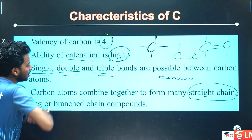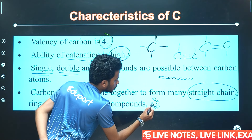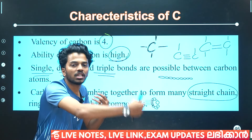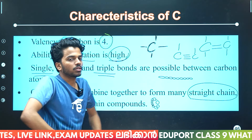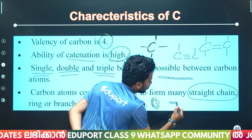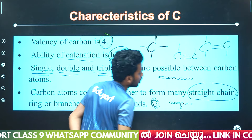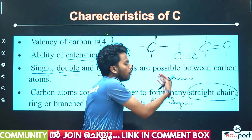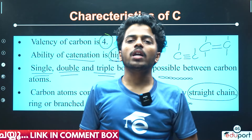Not only a straight chain — there is also a ring structure. Carbon atoms can form a ring, counting 1, 2, 3, 4, 5, 6, 7, 8, 9 — up to 9 or 10 carbons in a ring. For the branch, there is one main chain and branches going off from it — that is the branched chain structure.